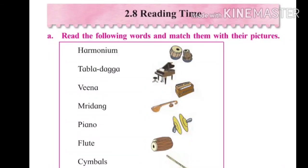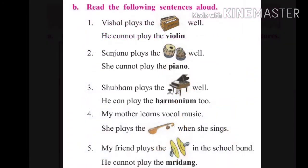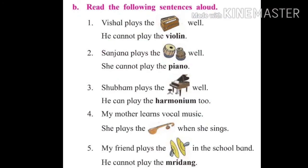Now, here are some sentences which I will read for you. Vishal plays the harmonium well. He cannot play the violin. Sanjana plays the tabla well. She cannot play the piano. Shubham plays the piano well. He can play the harmonium too.